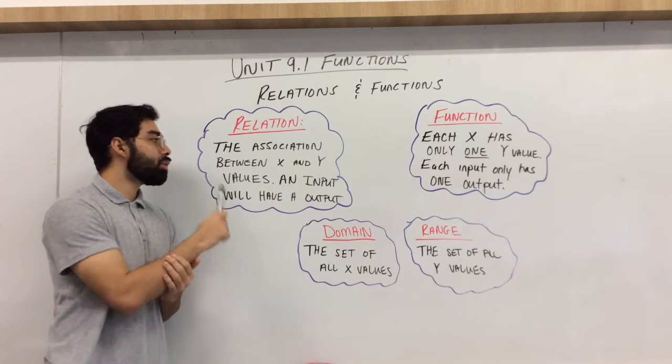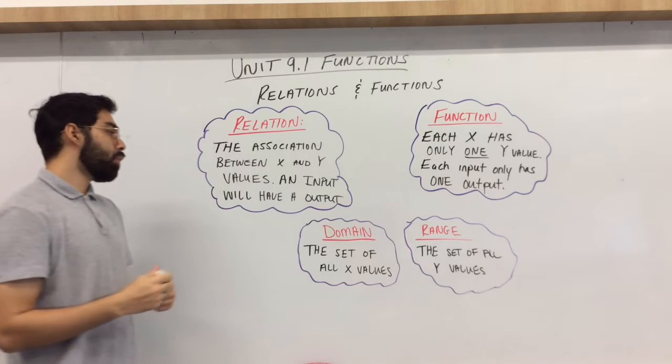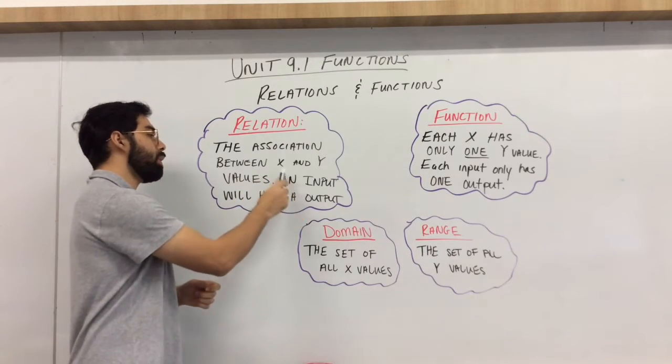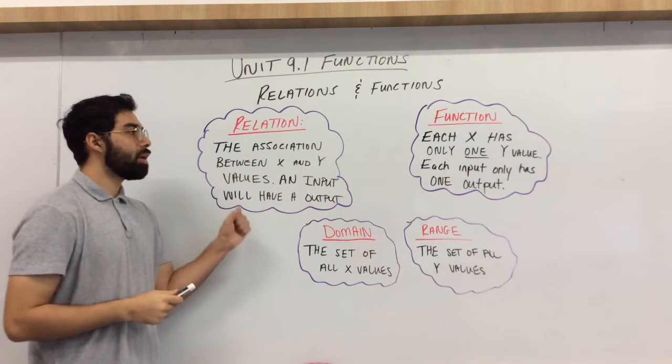The first one is a relation. That is the association between an x and y value. An input will have an output. So input being our x, our output being our y. That is our relation.